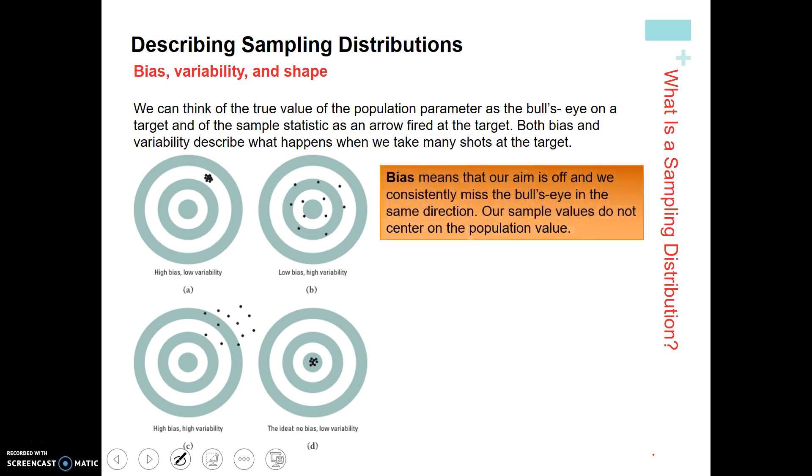And again, these graphs just show the ideal things. Like, high bias, low variability, that actually can be good for us. As long as we know that it's off by a little bit, we can go, oh, it's off by a little bit, so the cluster should be in here. So the biggest thing is knowing low variability.